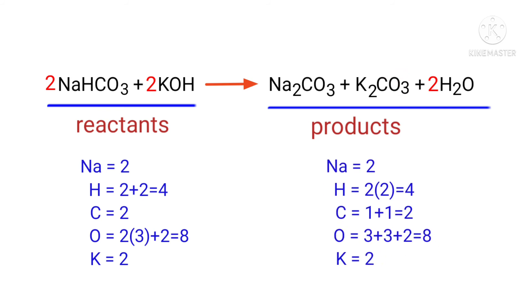The equation is now balanced. There are 2 sodium atoms, 4 hydrogen atoms, 2 carbon atoms, 8 oxygen atoms, and 2 potassium atoms on both sides.